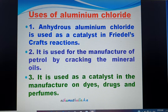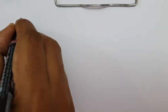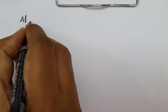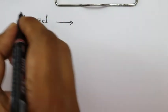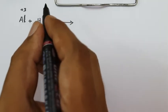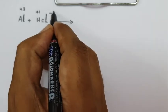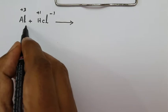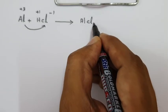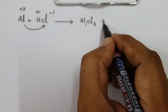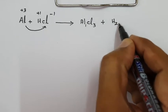Now let us see the preparation reactions in detail. When Aluminium metal is treated with Hydrochloric Acid (HCl), metals always lose electrons and become positive ions. Aluminium is a 3+ ion, hydrogen is +1, and chlorine is −1. This 3+ combines with Cl⁻ to form AlCl₃ (aluminium valency 3, chlorine valency 1), and hydrogen is liberated as H₂ gas.